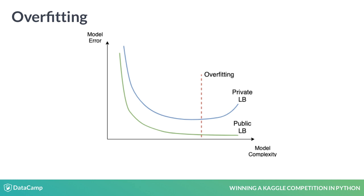The same could happen with public and private leaderboards. If we only look at the results on the public leaderboard, we could potentially overfit to it. Thus, our private leaderboard score will be considerably worse, together with our final place in the competition. To beat overfitting in both real-life projects and competitions, we need to use a good validation strategy. We will talk about it in the next chapter.